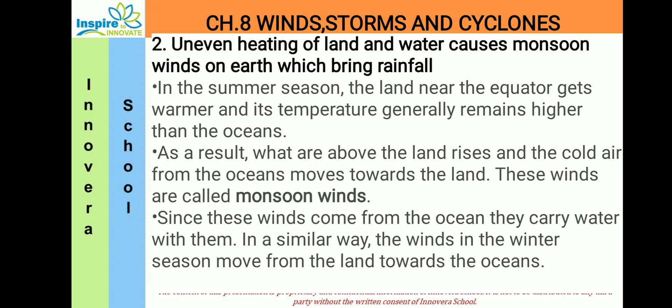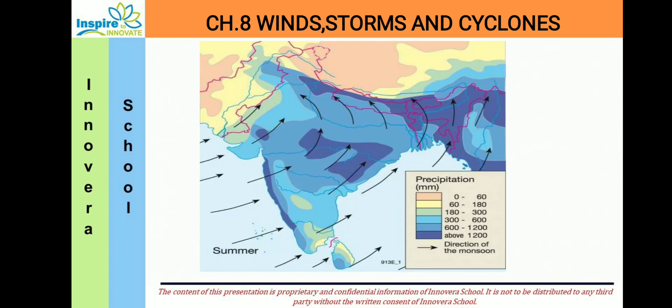In a similar way, the winds in the winter season move from the land towards the ocean. So here we can see regarding the air moving from the ocean towards the land, which brings the monsoon winds.